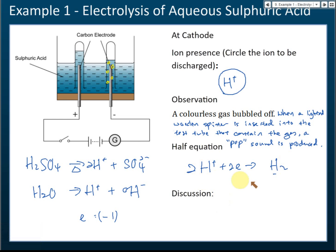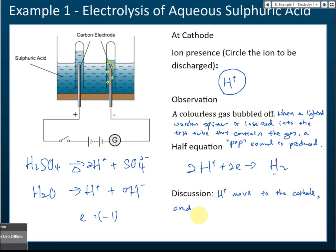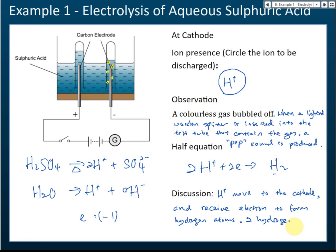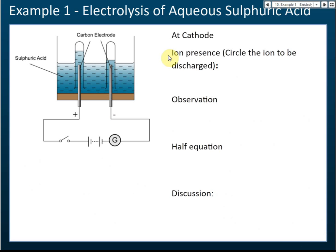For the discussion: hydrogen ions move to the cathode, receive electrons to form hydrogen atoms, and two hydrogen atoms combine to form a hydrogen molecule.